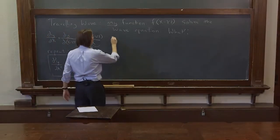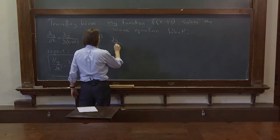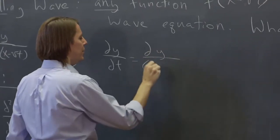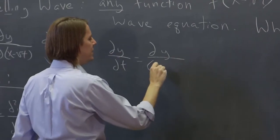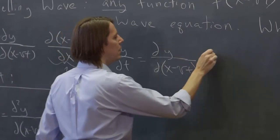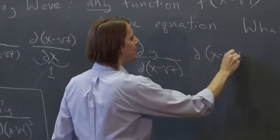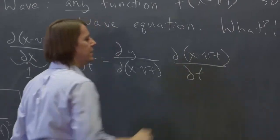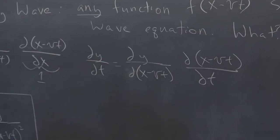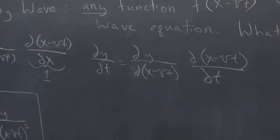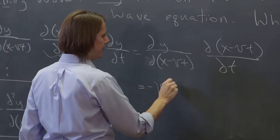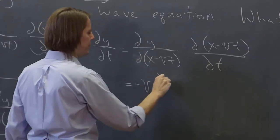Let's do dy/dt. dy/dt by the same logic or by the same dogma that I'm giving you, must be dy/d(x-vt), times d(x-vt)/dt. And now this part does not equal 1. It equals minus v. So this equals minus v dy/d(x-vt).